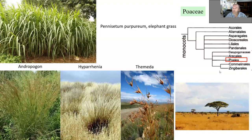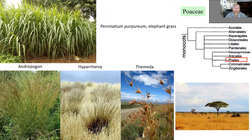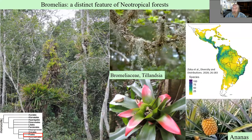Now we go to Poales and grasses — Poaceae — which obviously have a maximum in the savannah. These are some dominant grasses from African savannahs, including elephant grass Pennisetum purpureum, ecologically a bit like Imperata. These C4 grasses can dominate large areas with huge biomass — an ecological phenomenon that repeats in different areas of the tropics.